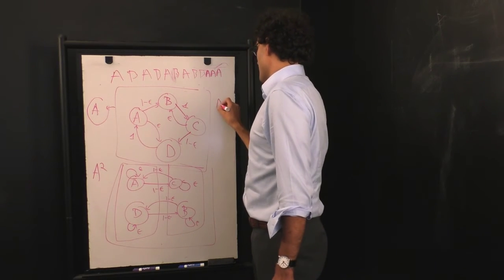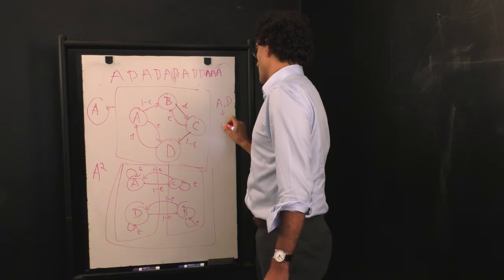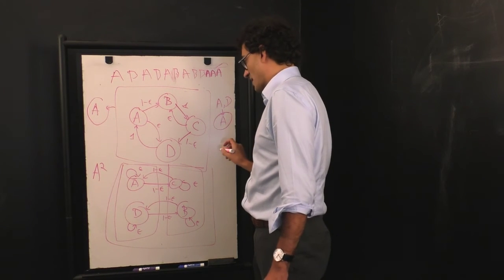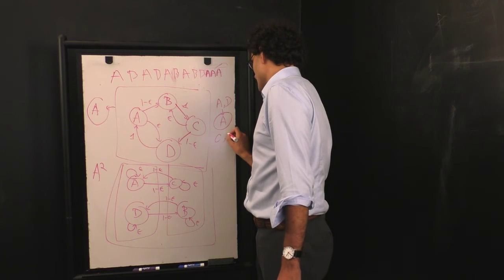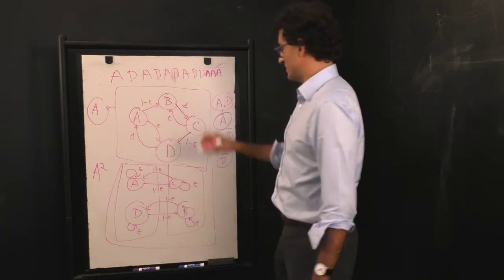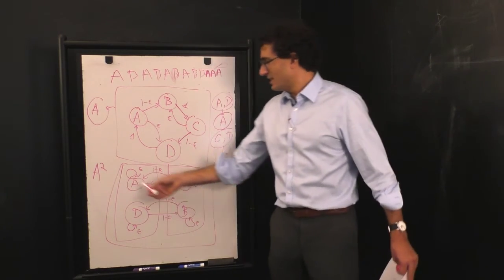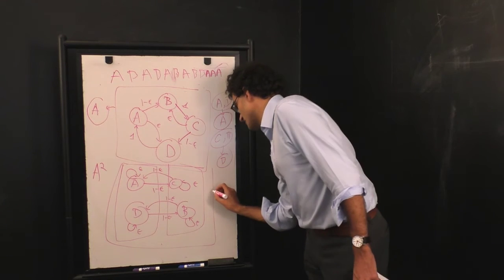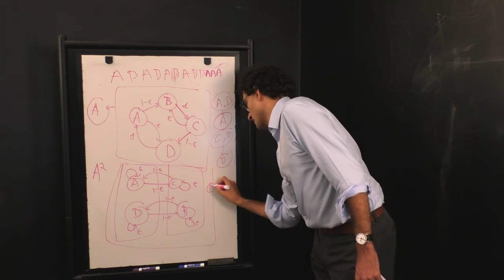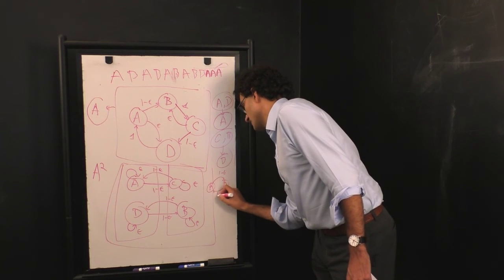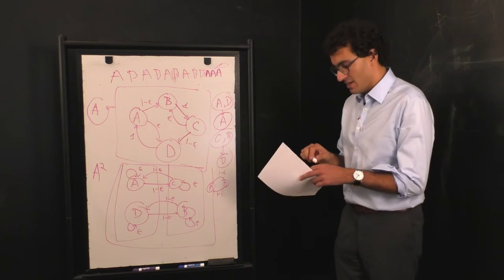If we say A and D are both equivalent to state A in the observations, and C and B are both equivalent to state B in the coarse grained observations, all of a sudden A squared, this matrix here, reduces down to the original evolution matrix we had for the slippy AB counter.